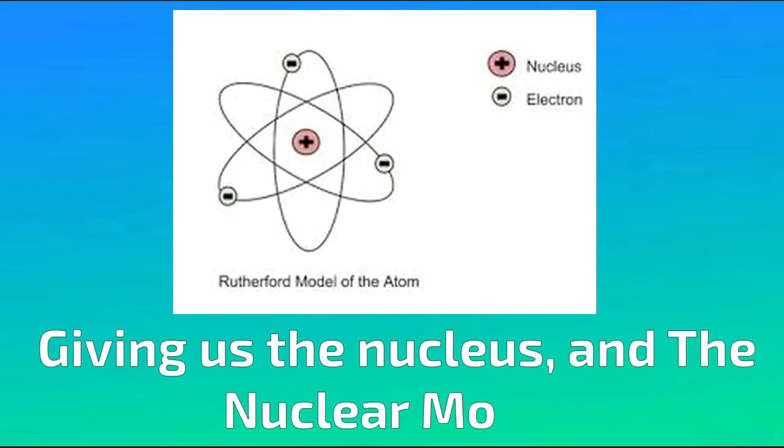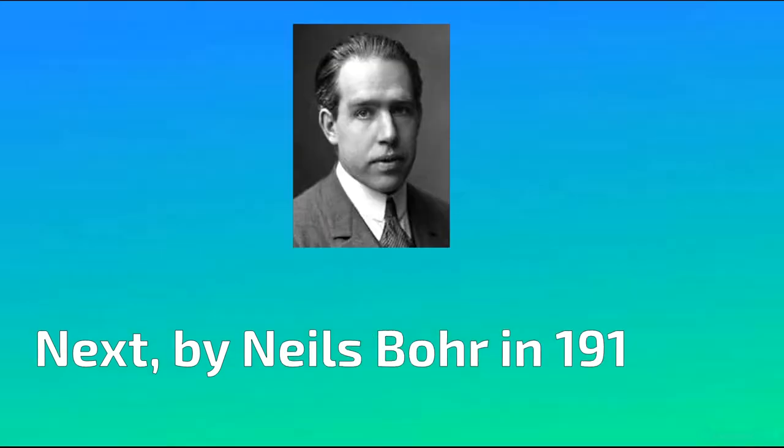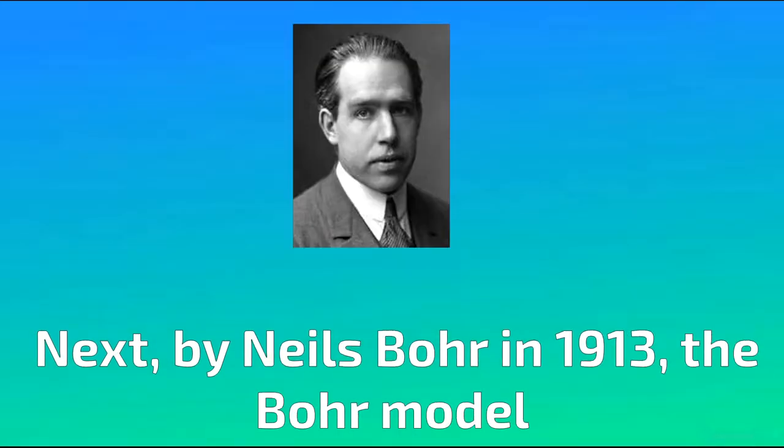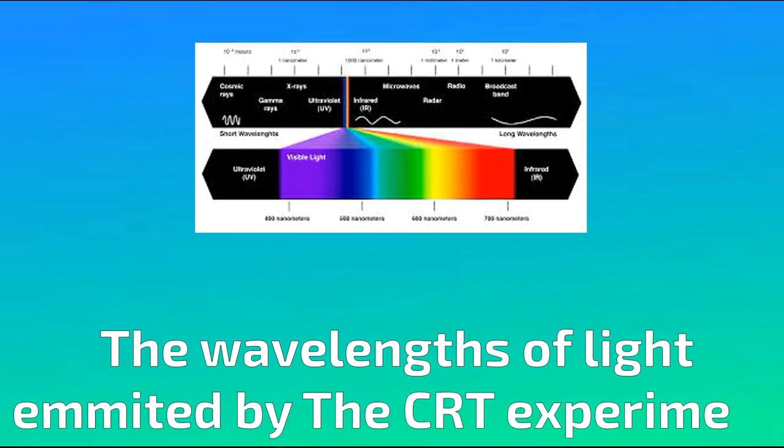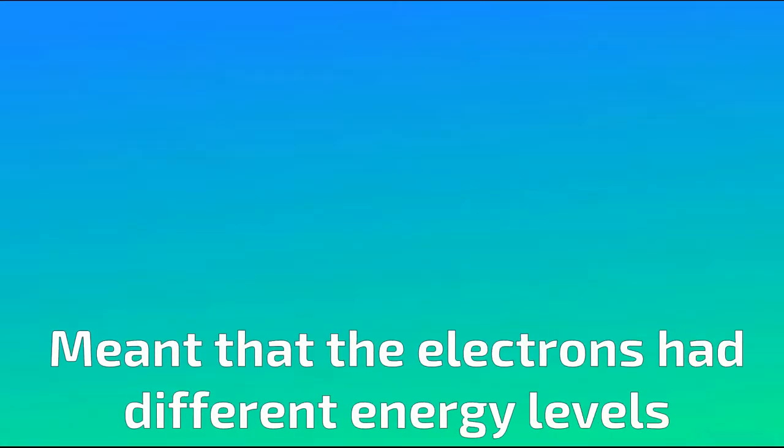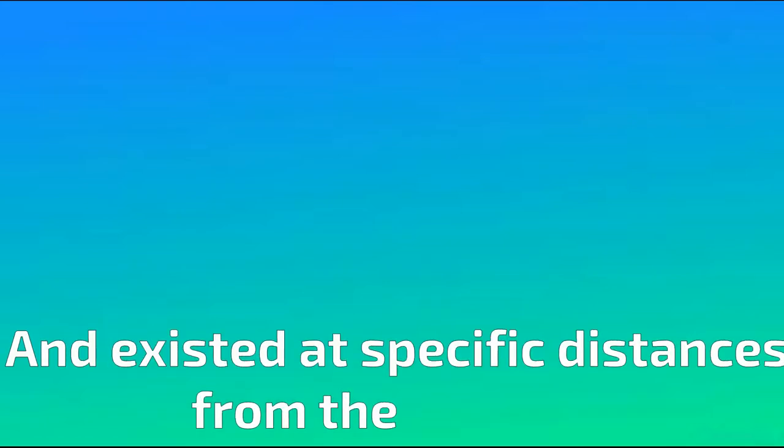This gave us a nucleus in the nuclear model. Next, by Niels Bohr in 1913, the Bohr model, also called the solar system model. He made this by using calculations and observations from previous experiments. The wavelengths of light emitted from the cathode ray tube experiment meant that the electrons had different energy levels and existed at specific distances from the nucleus.